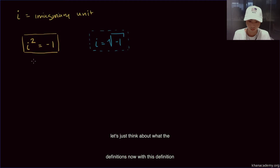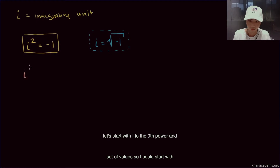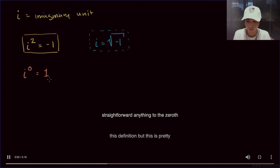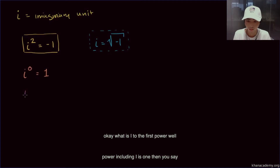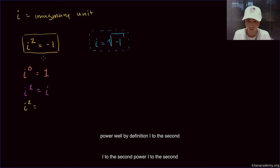With this definition, let's think about what the different powers of i are. If something squared is negative 1 and we take it to all sorts of powers, that should give us all sorts of results. The powers of i cycle through a set of values. Starting with i to the zeroth power — anything to the zeroth power is 1, so i to the zeroth power is 1. i to the first power is just i. And i to the second power, by definition, is equal to negative 1.